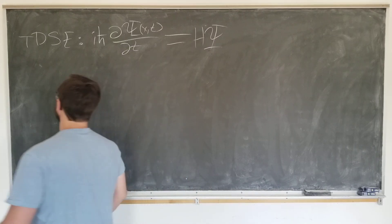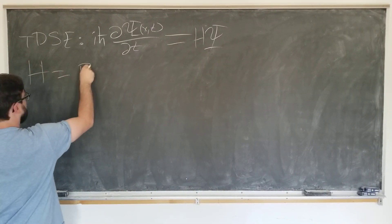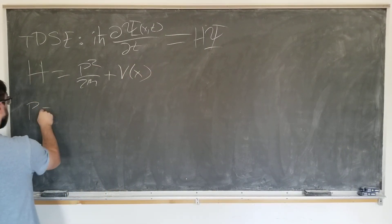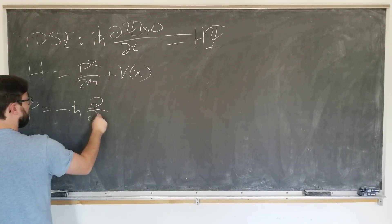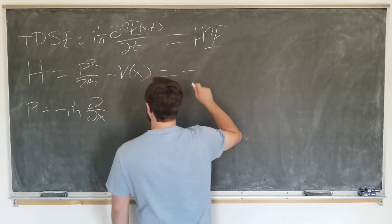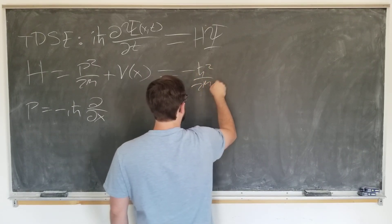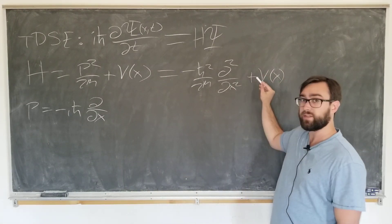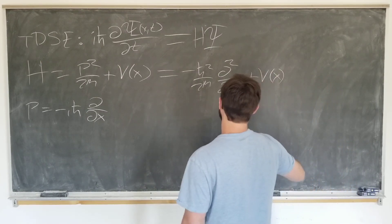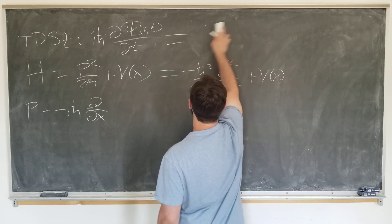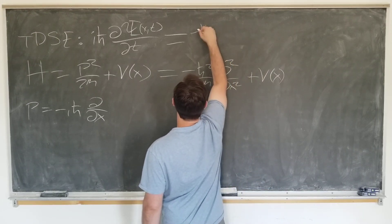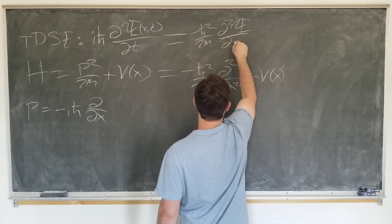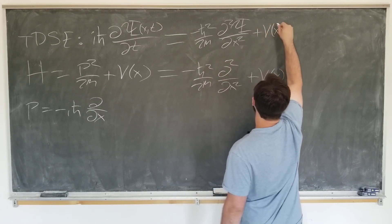Now let's talk about H-hat. H-hat is p-squared over 2m plus V(x). We know p is minus i h-bar d/dx, so this is simply minus h-bar squared over 2m times d-squared/dx-squared plus V(x). We'll operate this on psi and write a partial differential equation: minus h-bar squared over 2m times partial-squared psi by dx-squared plus V(x) psi.